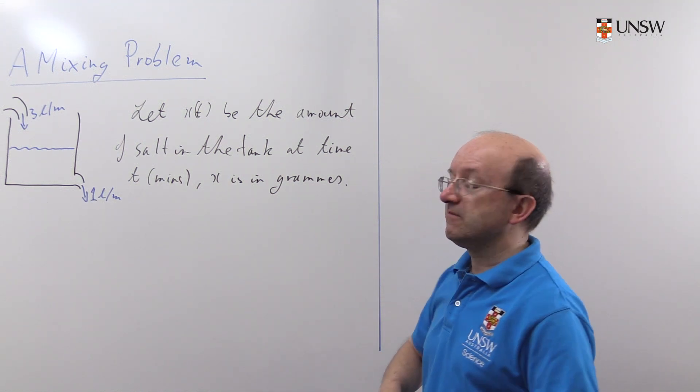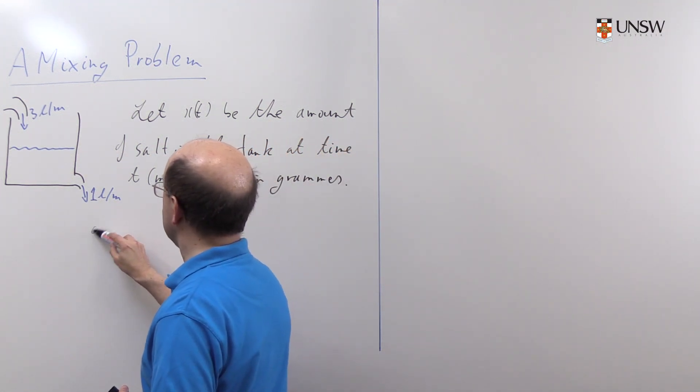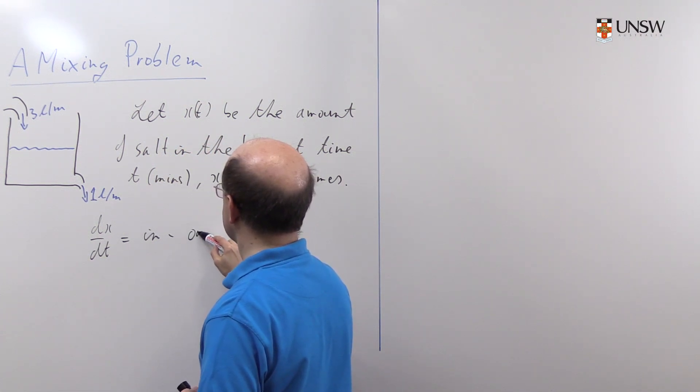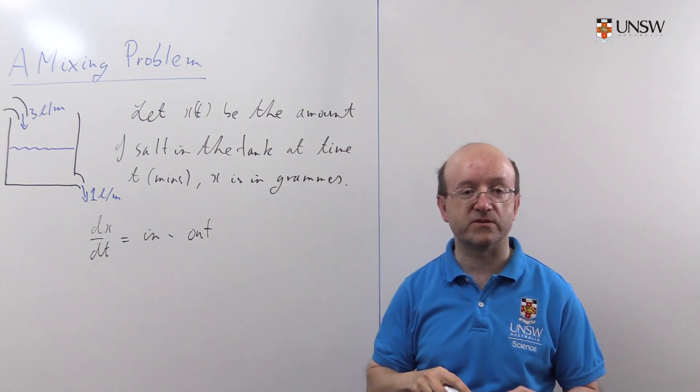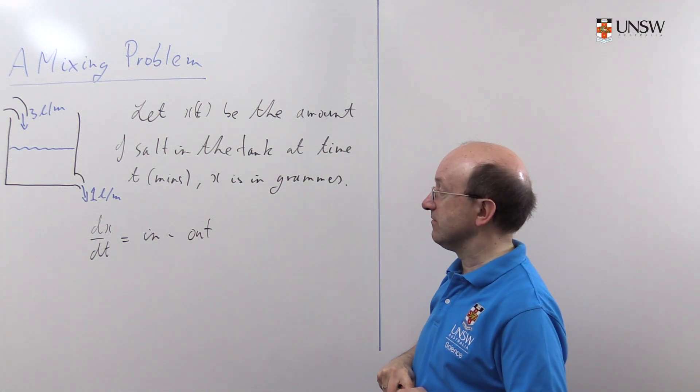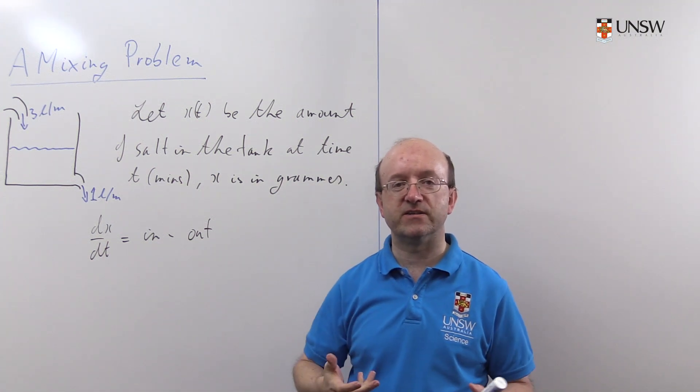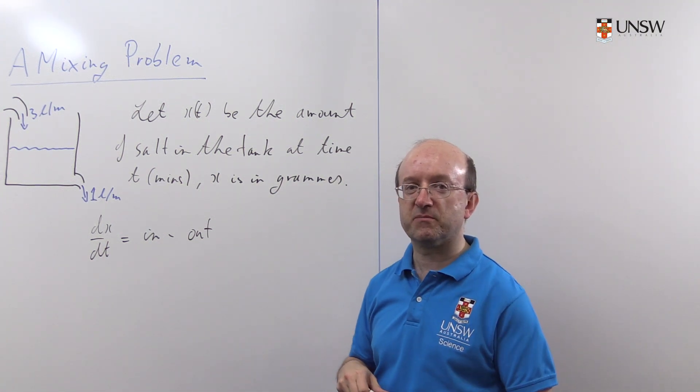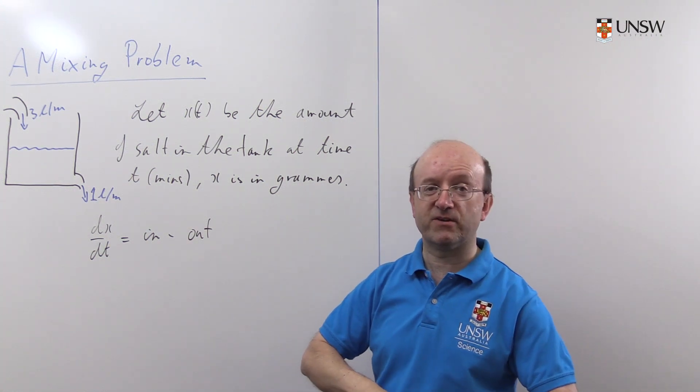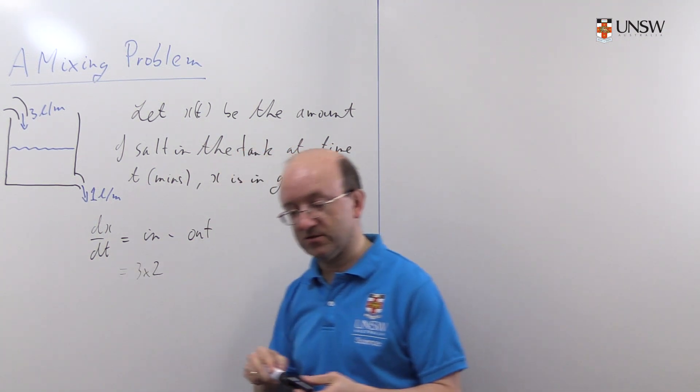To set up the differential equation, mixing problems are usually the same. We can write it as dx/dt is the inflow minus the outflow, what's coming in minus what's coming out. It's always that simple. The question then is to work out what's coming in and what's coming out. Well, the problem tells us that brine is being run in at 3 litres a minute and the brine contains 2 grams per litre. So we're having 3 times 2, 6 grams of salt arriving every minute. So we'll write this down as 3 by 2, just to remind ourselves where it comes from.